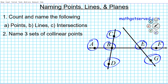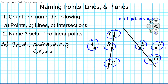Let's write down our answer. For number one A, there are seven points and they are: points A, B, C, D, E, F, and G. Those are all the points on this diagram. Let's move on to the next section — we need to name all the lines.